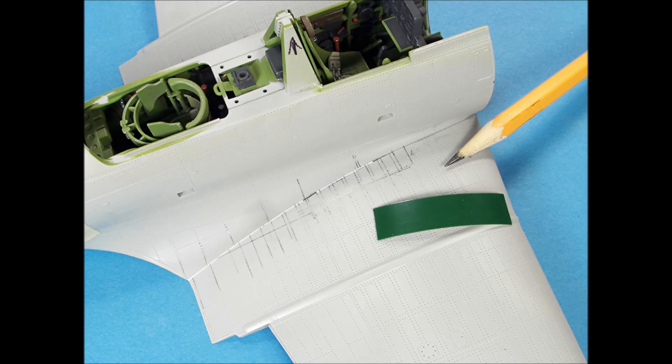To re-scribe panel lines, use labeling tape, which is very flexible, and it has a really nice edge. To start the process, I always redraw the lines that need to be repaired with a pencil.